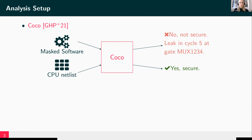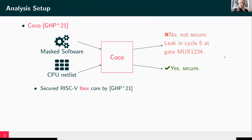We use COCO as a formal tool, which will verify that a masked assembly implementation runs securely on a given CPU netlist. In the case it's not secure, it will give us the exact cycle and gate in the netlist where the leakage occurs. This tool has already been applied to a much smaller processor, the IBEX core, and it was shown there that there are already several components which are problematic in the context of masking, for example, the register file.